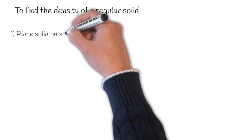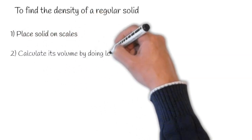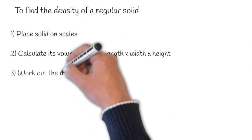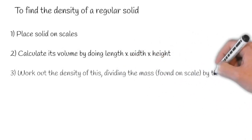To find the density of a regular solid: place the solid on a scale, calculate its volume by doing length times width times height, then work out the density by dividing the mass by the volume.